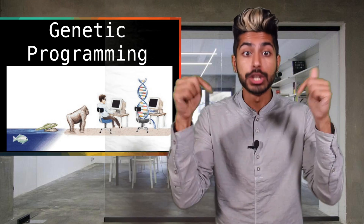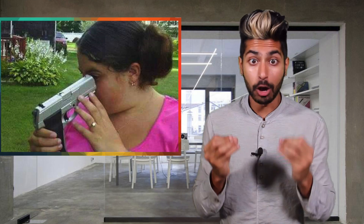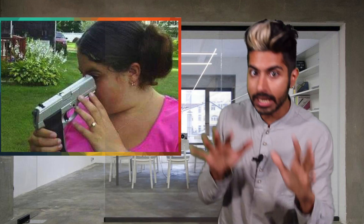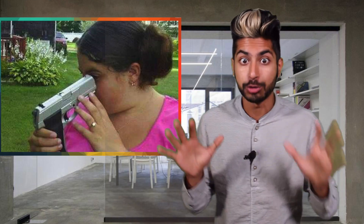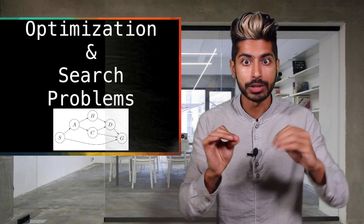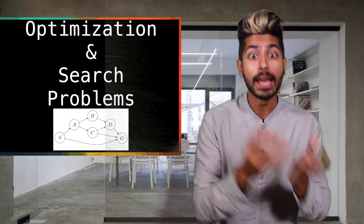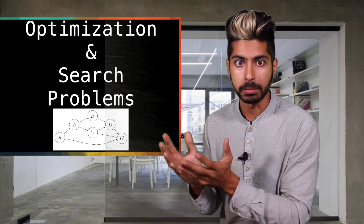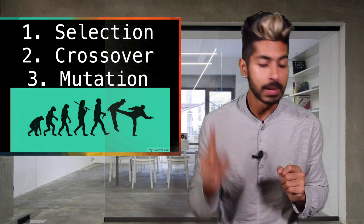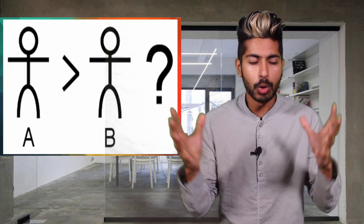That's where genetic programming can help. Genetic algorithms are inspired by the Darwinian process of natural selection, and they're used to generate solutions to optimization and search problems. They have three properties: selection, crossover, and mutation.